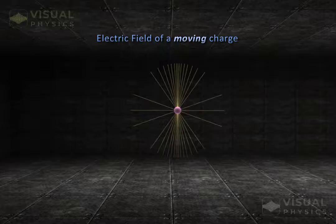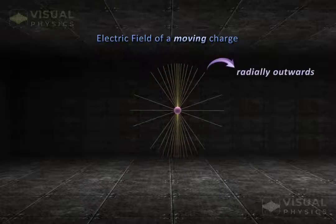Electric field of a moving charge is still radially outwards from it. But now it is stronger in a plane perpendicular to its motion.